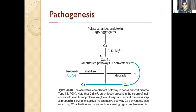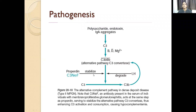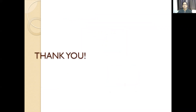Usually C3b is labile and not stable. But if there is a C3 nephritic factor, then it stabilizes the C3 convertase. Because of the C3 nephritic factor stabilizing the complex, there is continuous action of C3 and it gets deposited. So because of this, there is complement deposition in dense deposit disease.